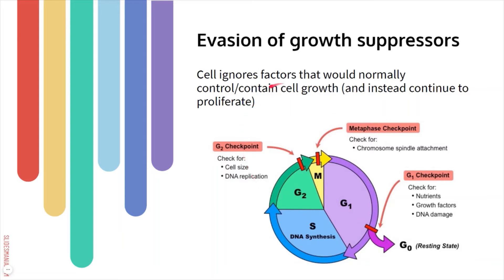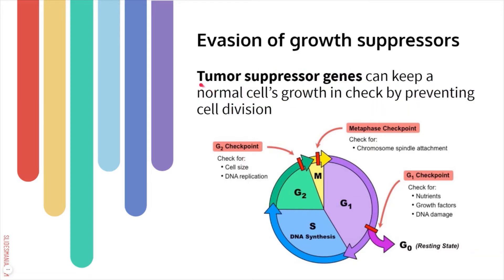Cancer cells ignore these factors that would normally stop cell division if errors are detected at these checkpoints. They'll keep proliferating even if there's DNA damage or if the DNA wasn't properly replicated. Tumor suppressor genes are genes normally supposed to prevent cell division and keep cell growth in check — involved in the G1 and G2 checkpoints. If a tumor suppressor gene is mutated and non-functional, those checkpoints won't work and mitosis proceeds even with DNA replication problems.